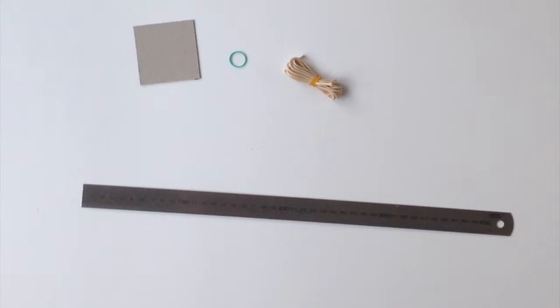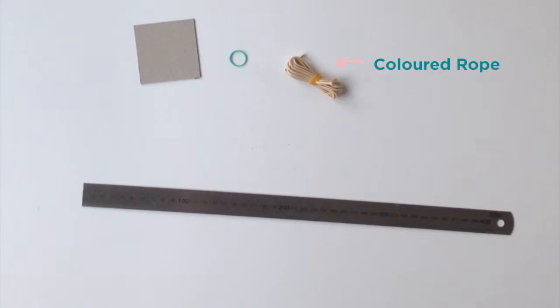In this video I'm going to show you how to make a tassel for your backpack keychain. In this part you'll need your piece of cardboard, the rubber band, and the colored rope.